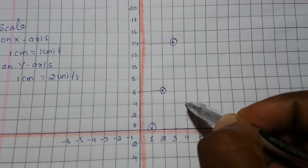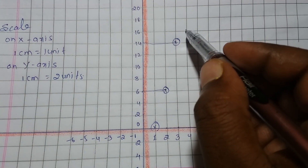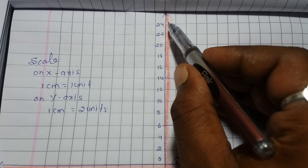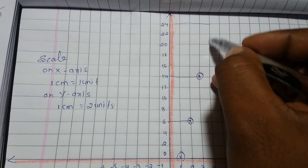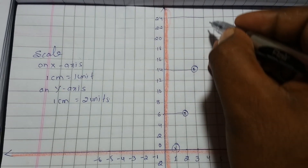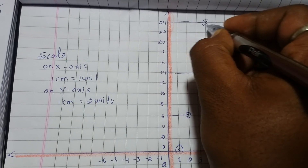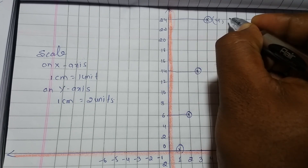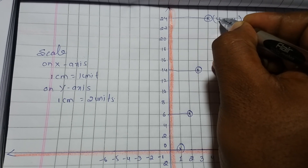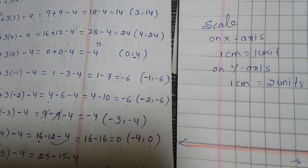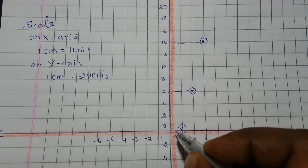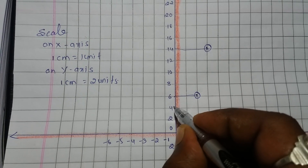The point 4 comma 24: 4 represents x and 24 represents y. For 0 comma minus 4, x is 0 and y is minus 4. Now mark the point minus 1 comma minus 6.